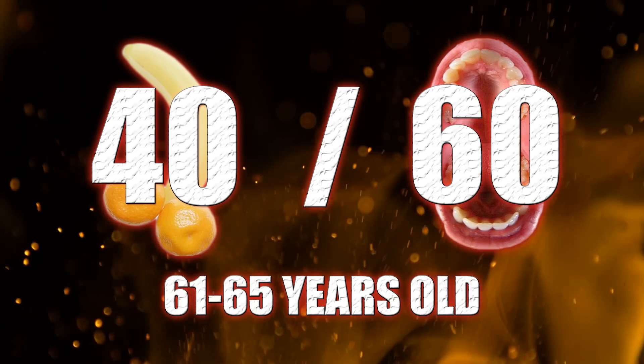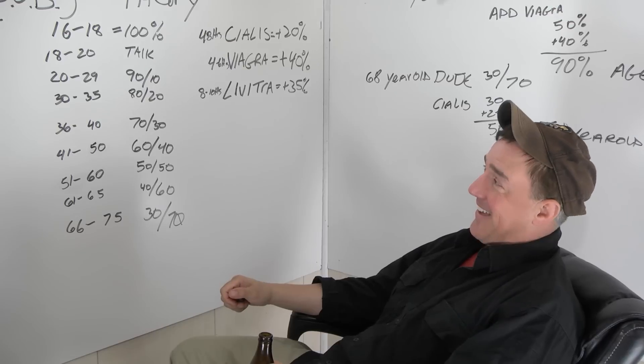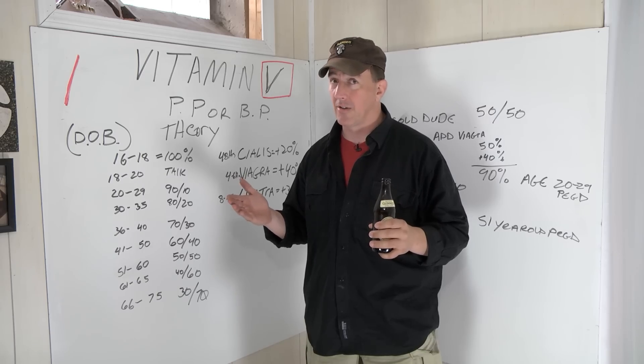60 to 65, you're 40, 60. Yeah, you got a big problem. You're mainly slot A guy. You're no longer the peg D guy.